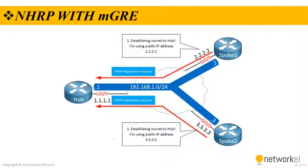On screen we have two spoke routers — spoke 1 and spoke 2. These are establishing a tunnel to the hub router. Once we look at the configurations, you will see that the destination IP address of the hub router is statically configured on the spoke routers. The hub router will dynamically accept spoke routers.